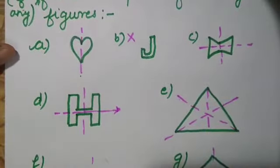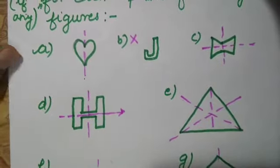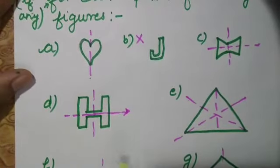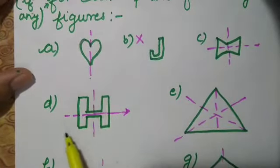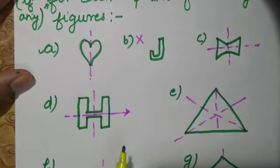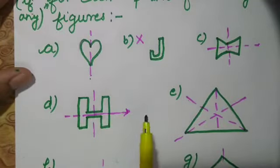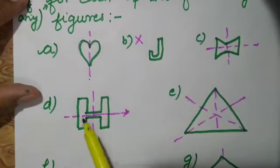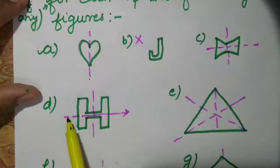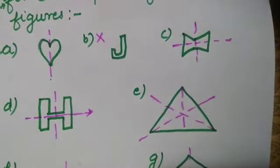Come to part D. Part D we have is the English alphabet H. We have to draw the lines of symmetry. On folding through the vertical line or horizontal line, those parts completely overlap each other. That's why this figure also has two lines of symmetry — vertical line of symmetry and horizontal line of symmetry. Come to part E — we have given an equilateral triangle.